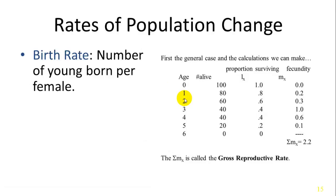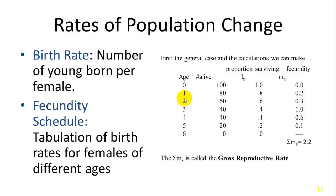The rates of population change are a factor of the birth rate — how many are being recruited each year into the population — and the fecundity schedule, meaning how many females are giving birth, laying eggs, or reproducing throughout the different ages.